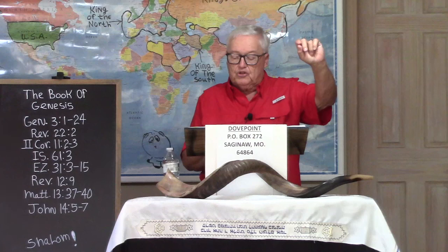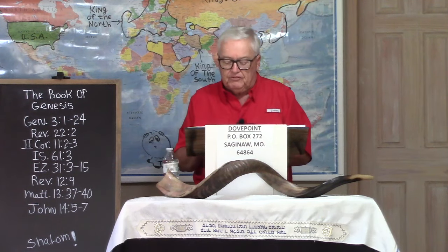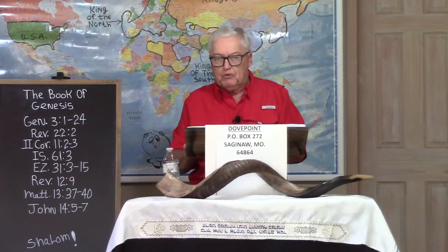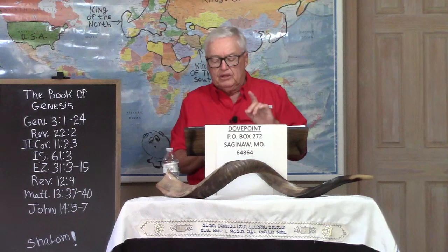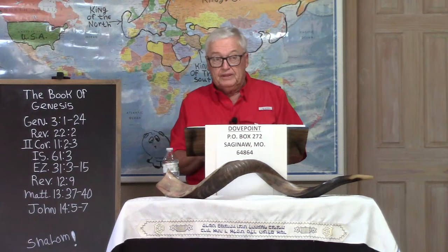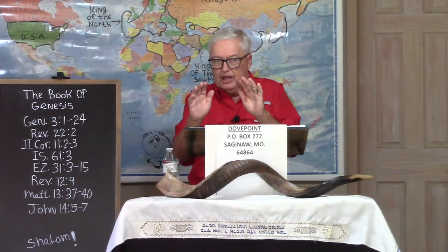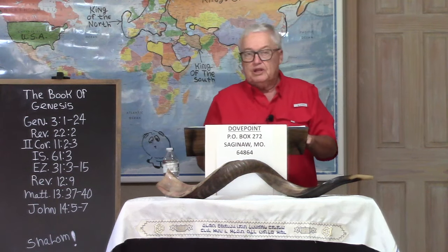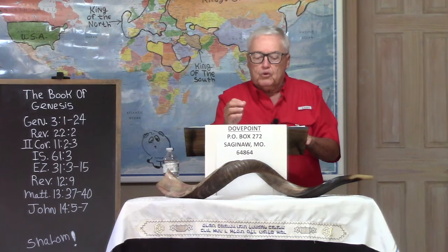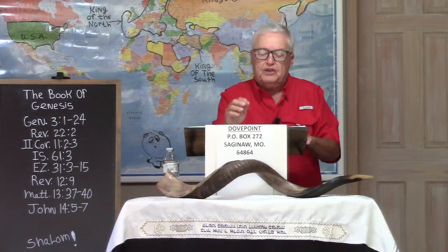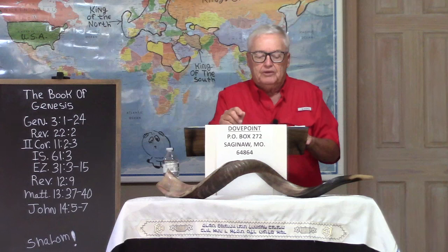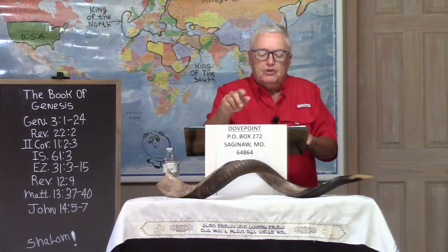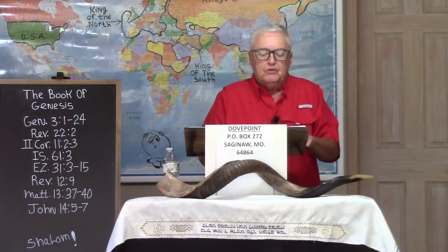I'm going to start with the last verse in chapter 2, verse 25, speaking of Adam and Eve: 'And they were both naked, the man and his wife, and were not ashamed.' Why were they not ashamed? They were not ashamed because they hadn't sinned yet. Sin always brings shame, and shame's favorite game is to hide and to cover things up. That brings us to chapter 3, verse 1: 'Now the serpent was more subtle.' That word subtle in the Hebrew — going back to the manuscripts — is arum, which means he was more cunning and more crafty. The serpent was more subtle than any other beast of the field which the Lord God had made.